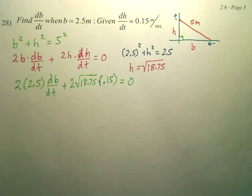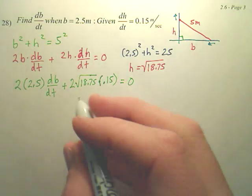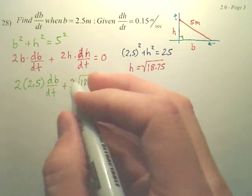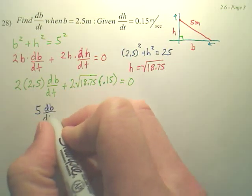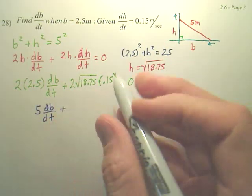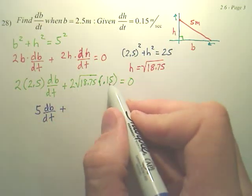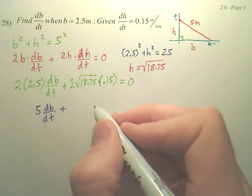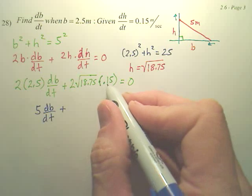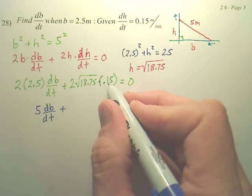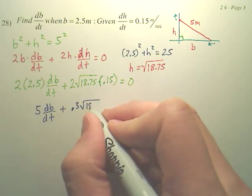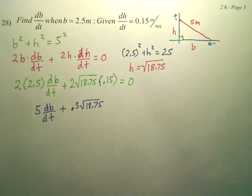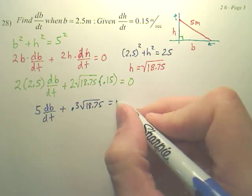Now these are nasty numbers. But what you end up with is 2 times 2.5, so what is that? Isn't that 5? db/dt. Plus 2 times this. Well, 2 times 0.15. If I have 2, 15 cents, isn't that 30 cents? So that's 0.3 times the square root of 18.75 equals 0.